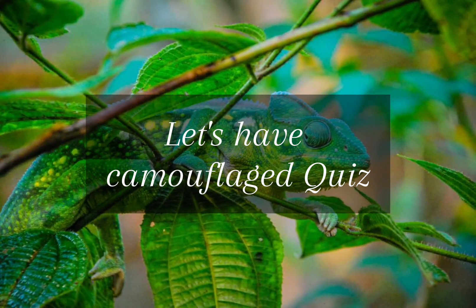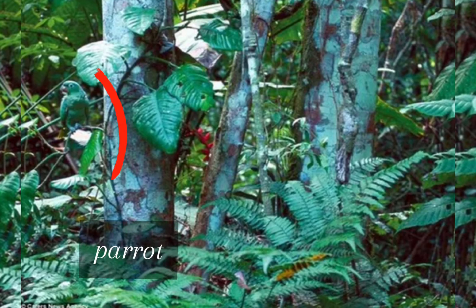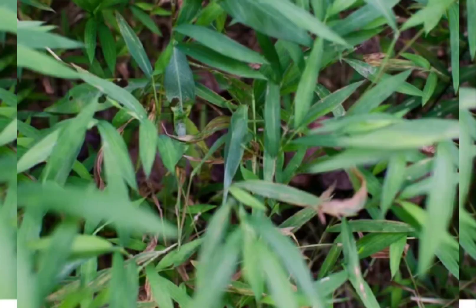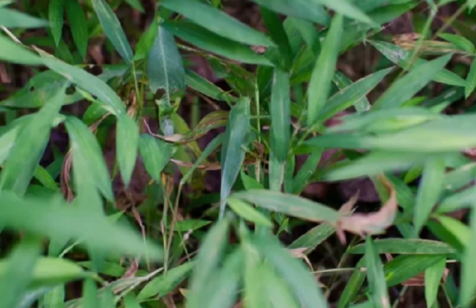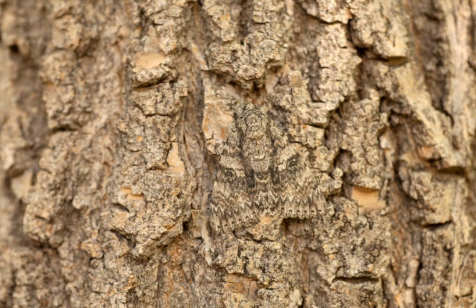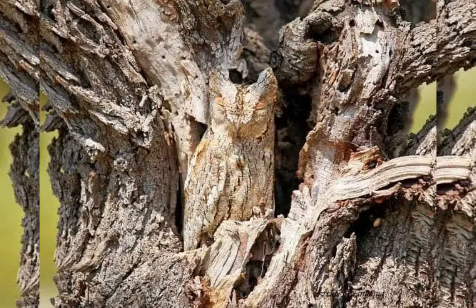Let's have a camouflage quiz! Find the animal in the forest — three, two, one — parrot! Guess the insect hidden in grass — three, two, one — grasshopper! Guess the insect hidden in the tree trunk — three, two, one — moth!